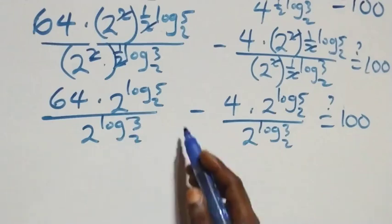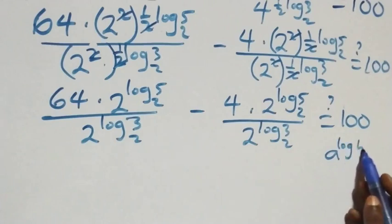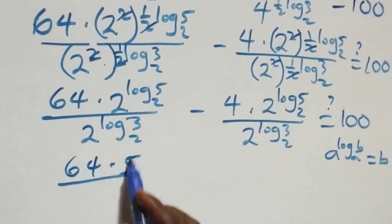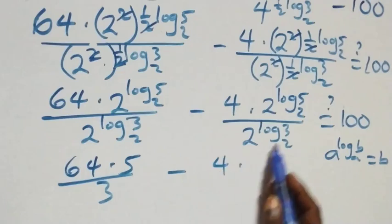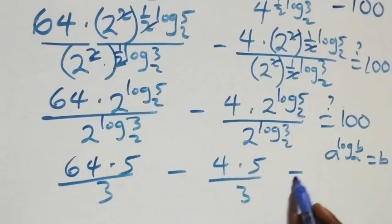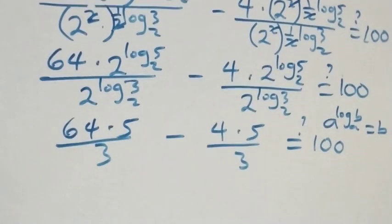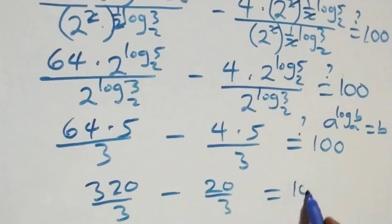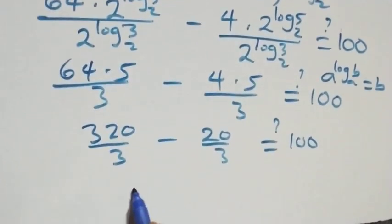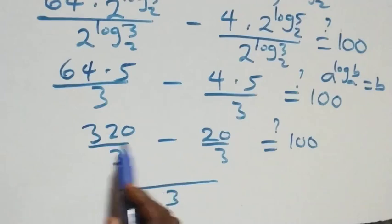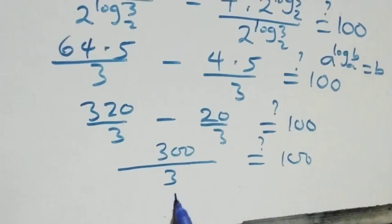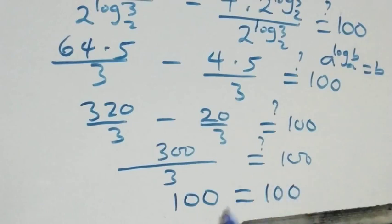Applying the identity a raised to power log base a of b equals b, we get 2 raised to power log₂5 equals 5 and 2 raised to power log₂3 equals 3. So 64 times 5 over 3, minus 4 times 5 over 3, equals 320 over 3 minus 20 over 3. Combining fractions with common denominator 3: 300 over 3 equals 100. This equals 100 on the right-hand side.